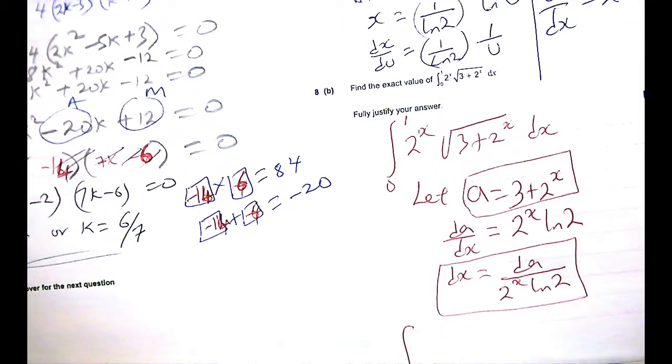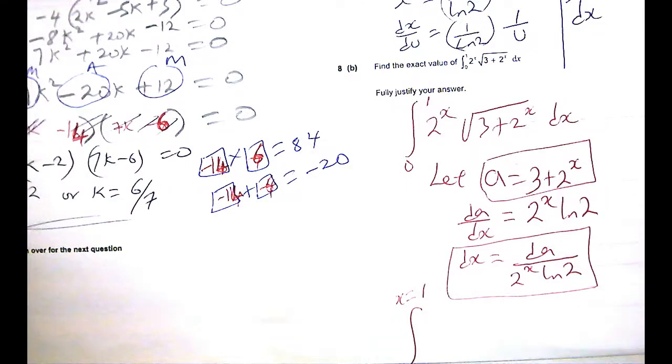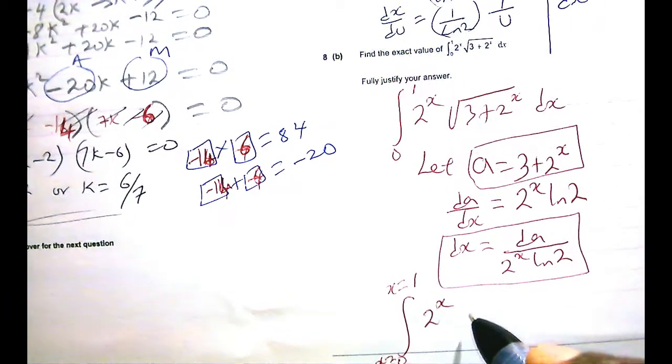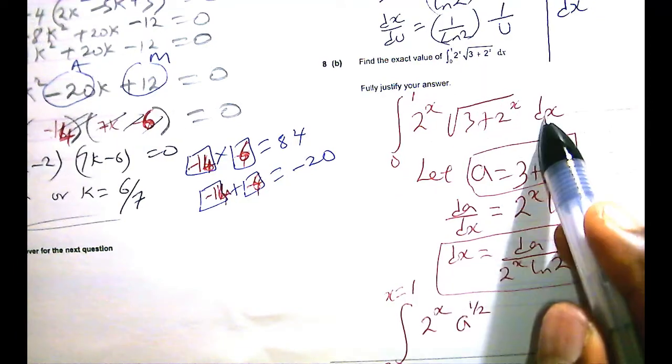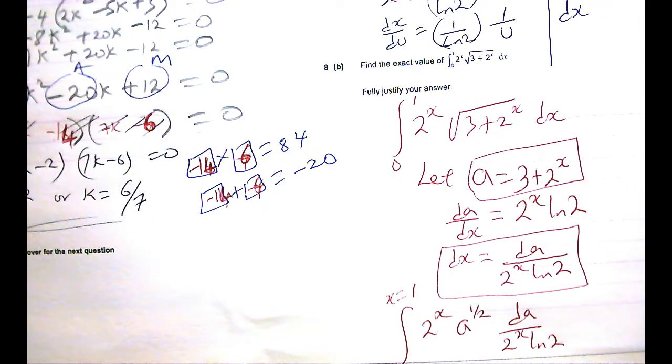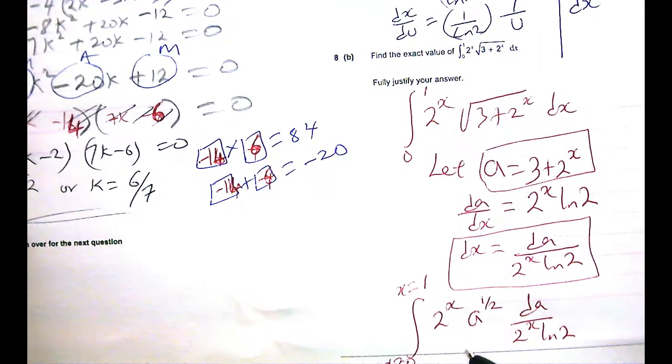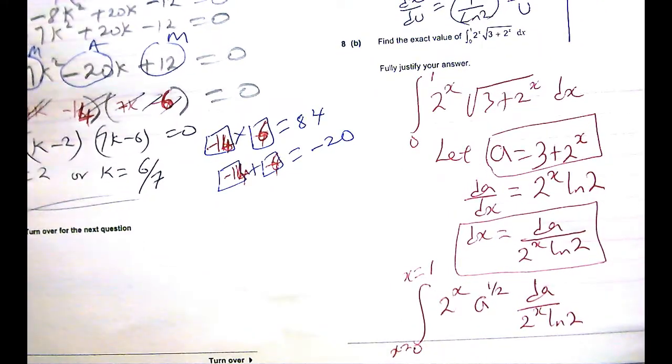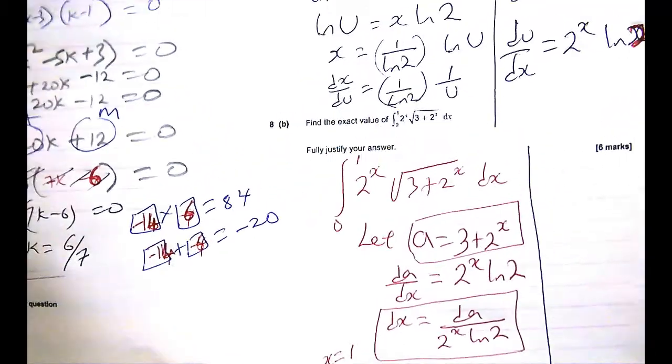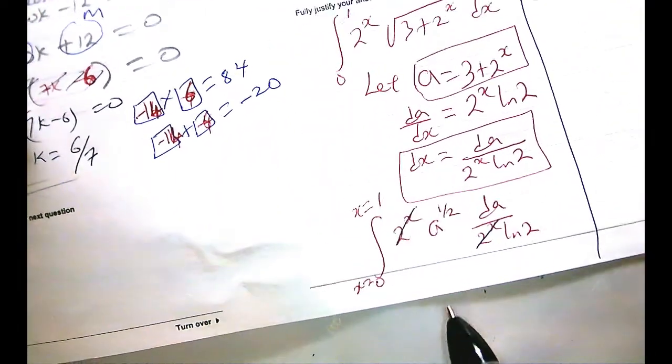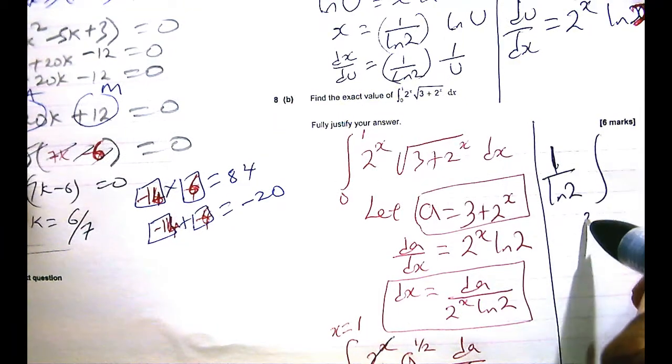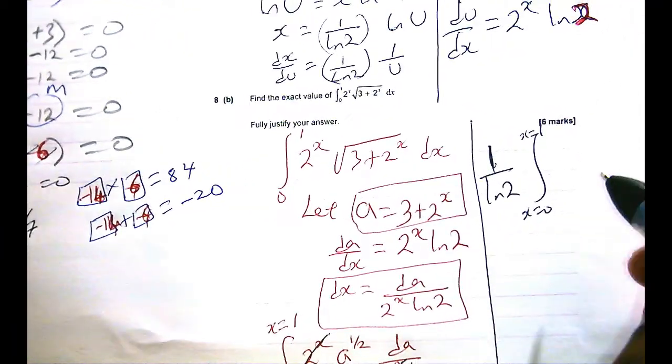Now, we are going to replace for 3 plus 2x there, and we're also going to replace for dx there. So the question now becomes integral from 0 to 1. Of course, these are values of x, not values of A. But that becomes 2 to the x. Instead of root 3 plus 2x, it will be root A, which is A to the half. And instead of dx, it's going to be da over 2 to the x lin 2. Now, the good news is that 2 to the x, we should not have been there, because you shouldn't be having an x again when you have changed everything to A. The good news is that this guy cancels that guy. And lin 2 can wait outside for us.